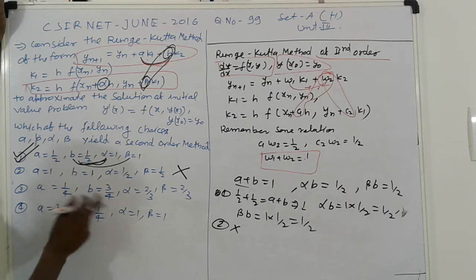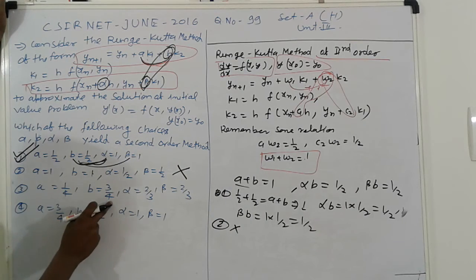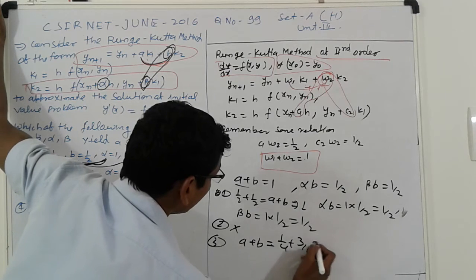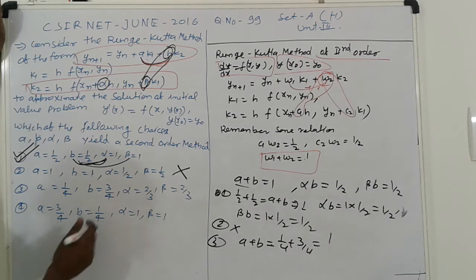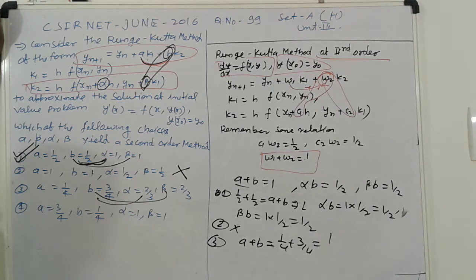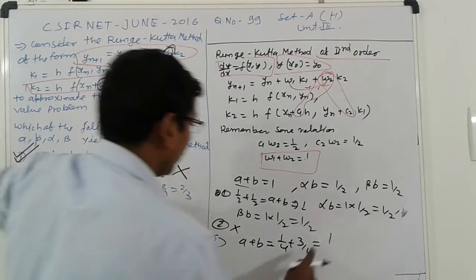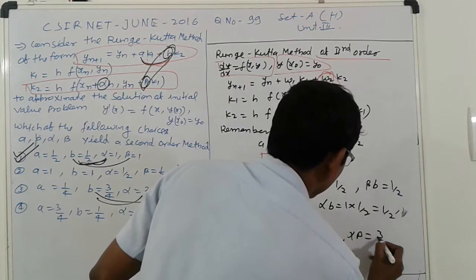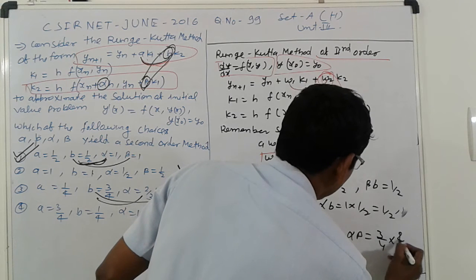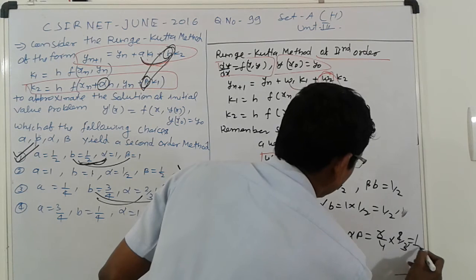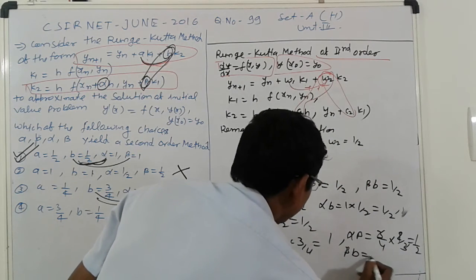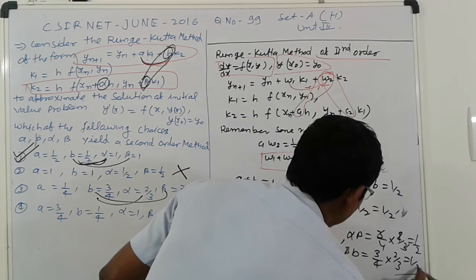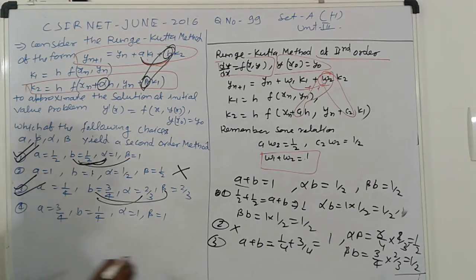Third option. A plus b is 1. 1/4 plus 3/4. A plus b equals 1/4 plus 3/4, then we get 1. Another product of this: alpha*b, we get 3/4 times 2/3. Alpha*b equals 3/4 times 2/3, so 3/4 times 1/2 by 3, that is 1/2. And beta*b: 3/4 times 2/3, 2/2. It means that this third option is correct, which is true.